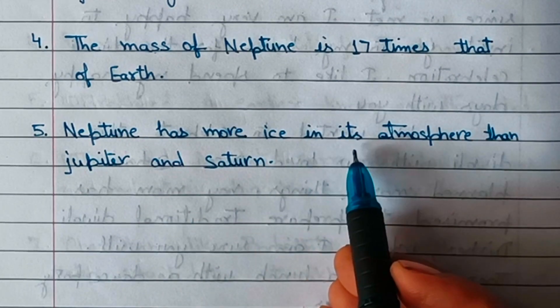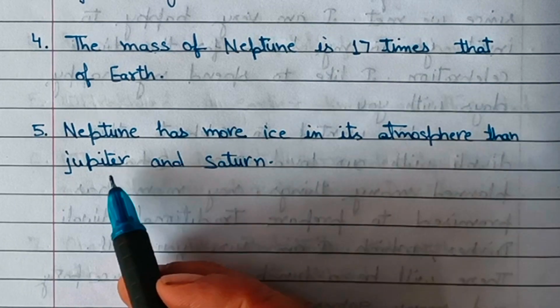Neptune has more ice in its atmosphere than Jupiter and Saturn.